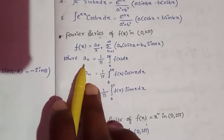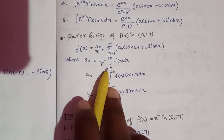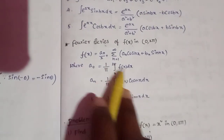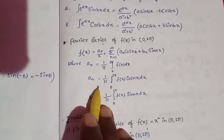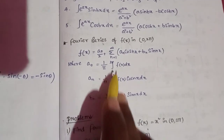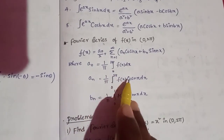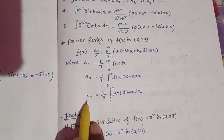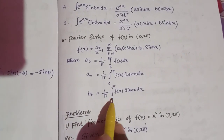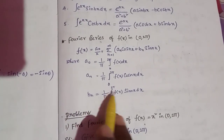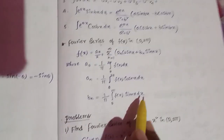a-naught is equal to 1 by π, integration of 0 to 2π, f(x) dx. a_n is equal to 1 by π, integration of 0 to 2π, f(x) cos(nx) dx. b_n is equal to 1 by π, integration of 0 to 2π, f(x) sin(nx) dx.